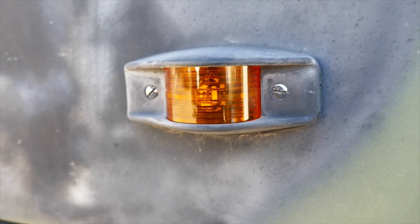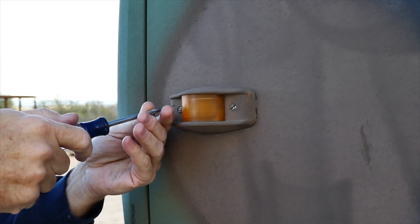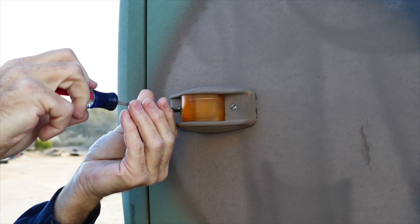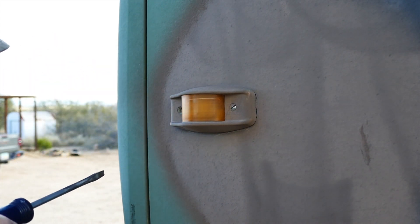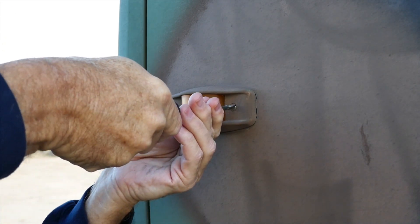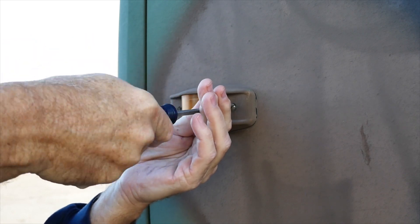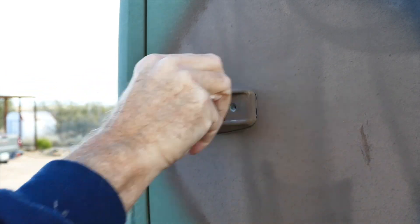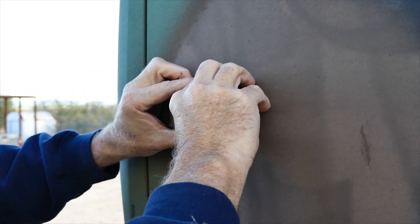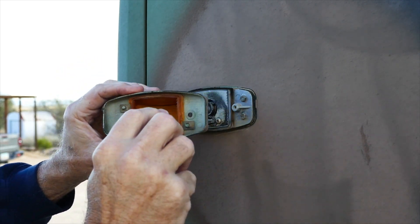Basically we're just gonna remove these two screws and I can tell these have never been out. It comes off. You can see the lens. Now what's interesting about this, you have these two tabs here that hold the center.